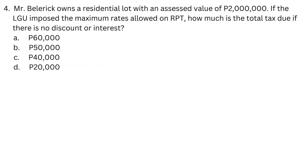Number 4. Mr. Belarick owns a residential lot with an assessed value of 2 million. If the LGU imposed the maximum rates allowed on RPT, how much is the total tax due if there is no discount amount or interest? A. 60,000. B. 50,000. C. 40,000. D. 20,000.